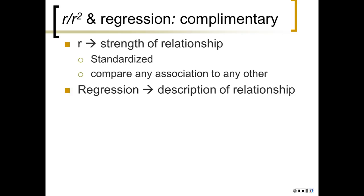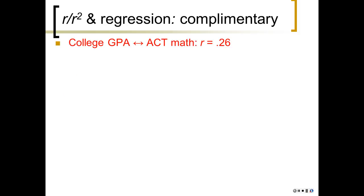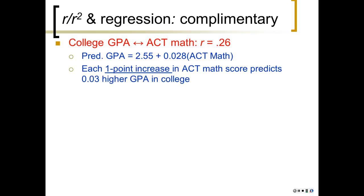So regression and correlation are two complementary methods. Correlation tells you the strength of a relationship between two variables. It's standardized. You can compare any correlation to any other correlation. Regression is a description of that relationship, kind of in local valid terms, in natural units, the units that are natural to the thing you're measuring. Prediction, in this case, is possible. So in this case, for this example, let's say college GPA and ACT math are correlated at 0.26. And here's the regression equation. So the interpretation of that for regression is each one-point increase in ACT math score predicts 0.03 higher GPA in college. It's a small numerical jump, but that doesn't mean it's not important. It could be extremely strong. Of course, it's kind of weakish here, 0.26.